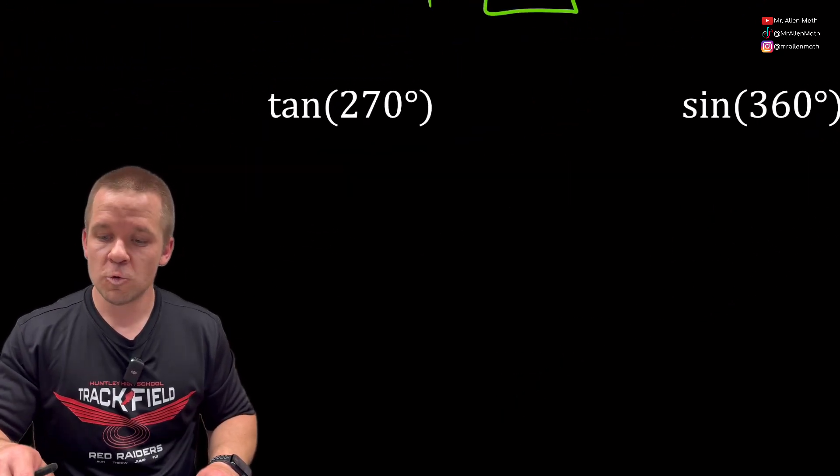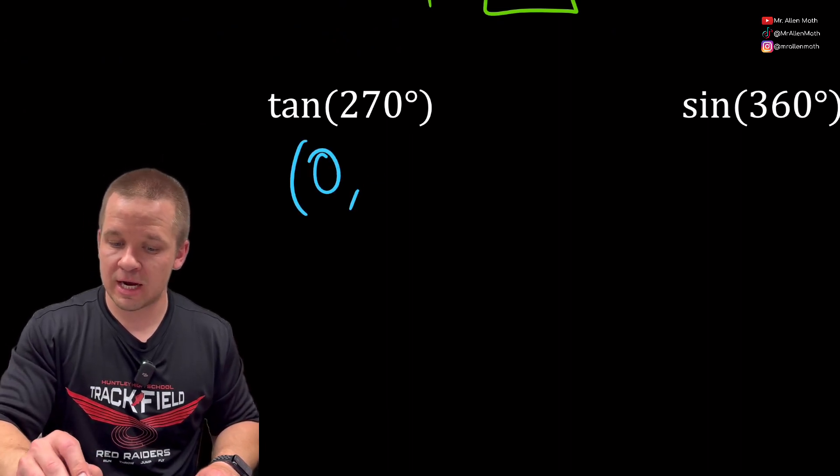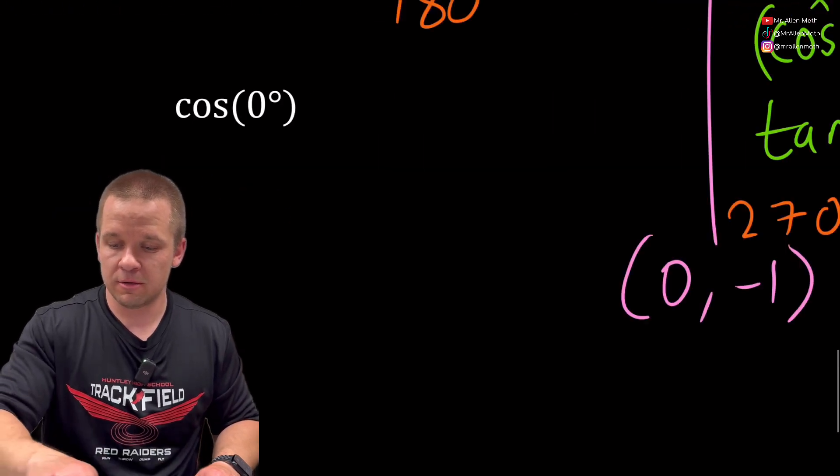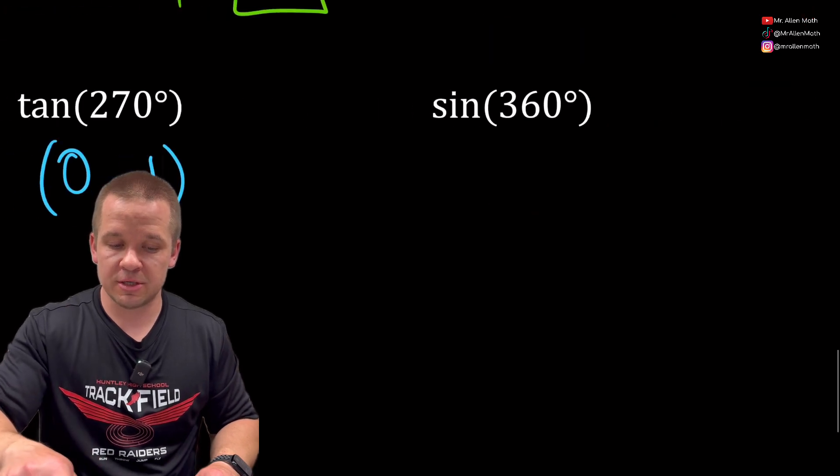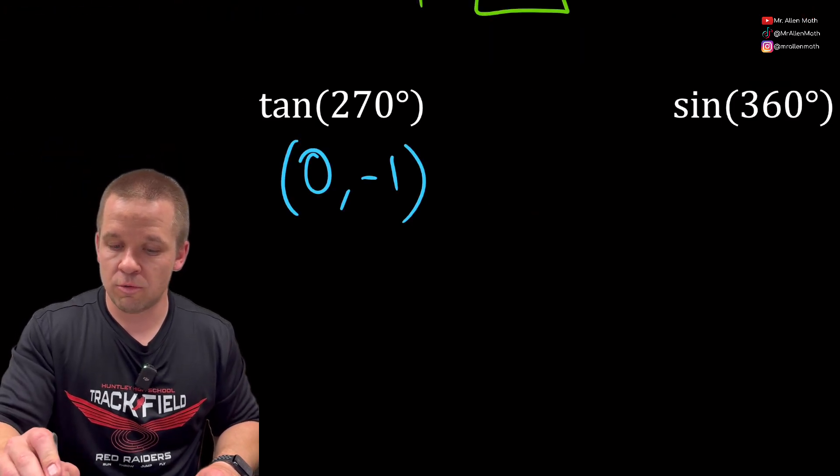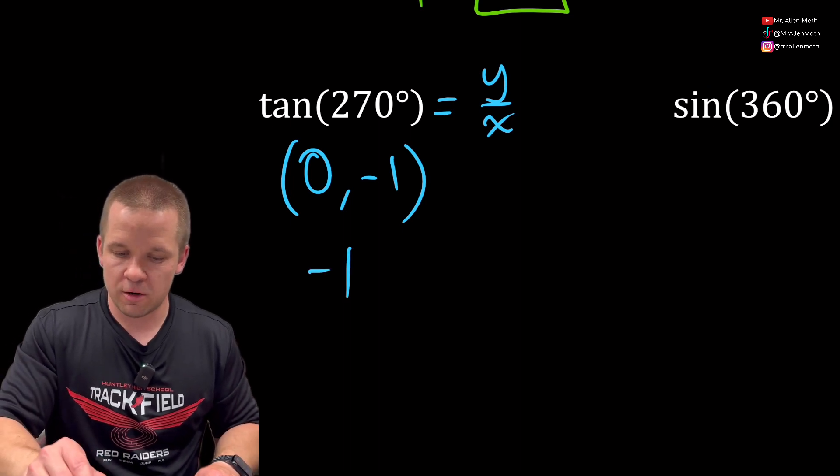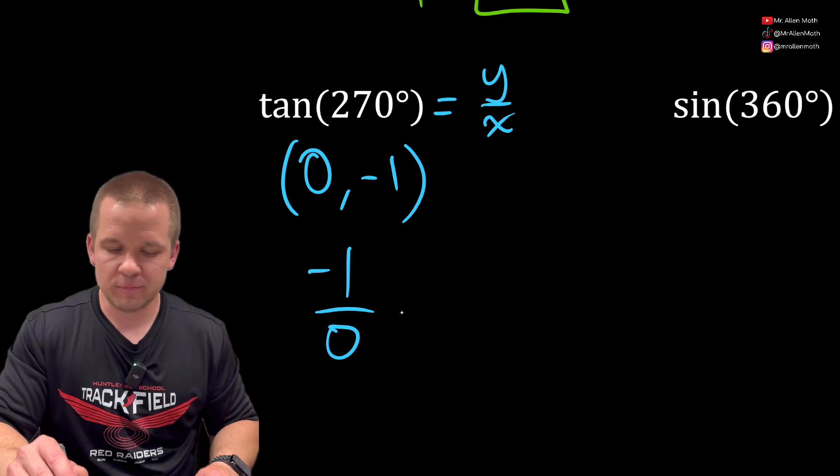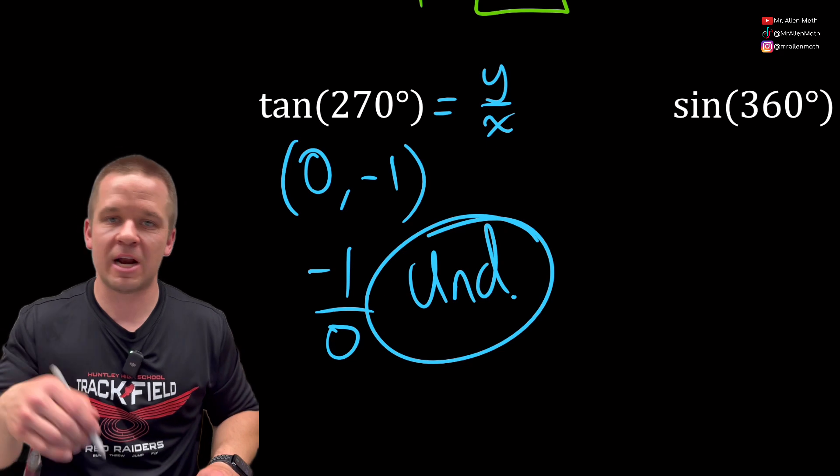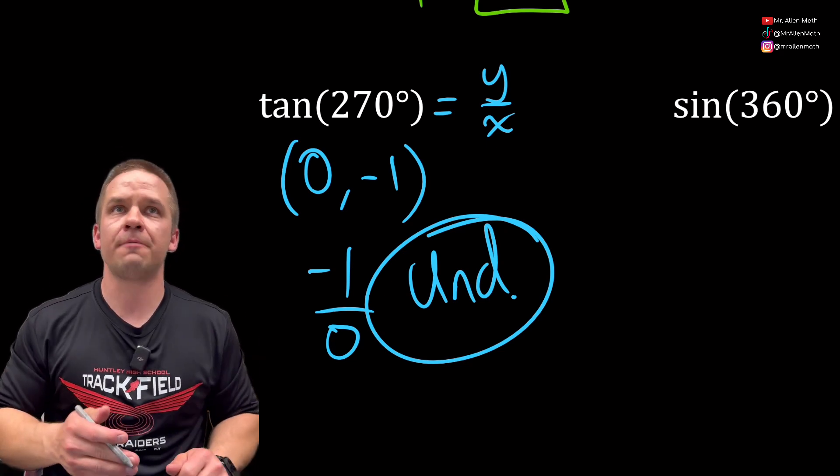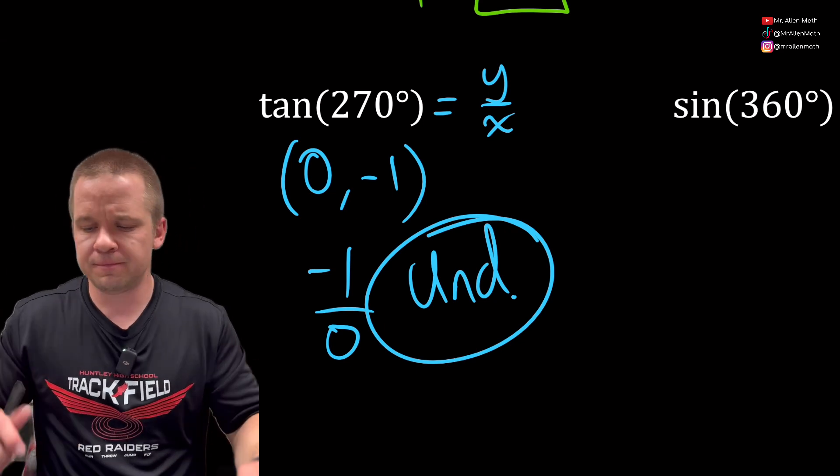Tangent 270. That coordinate I believe is going to be (0,-1). If you don't remember that, you can always look back over here. We said that tangent equals y over x. So for this one, it's negative one over zero. Can I divide by zero? So this would be undefined. I'm dividing by zero, can't do it, undefined. Tangent's often referred to as slope of a line, and if it's vertical, it's an undefined slope.